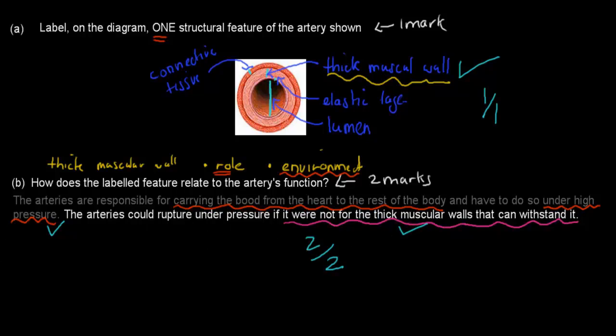And where does that question come from? It comes from this dot point. Compare the structures of arteries, capillaries, and veins in relation to their function. So compare, that means we need to know about arteries, capillaries, and veins. Even though in this case it doesn't talk about arteries, capillaries, and veins specifically, it only talks about arteries.